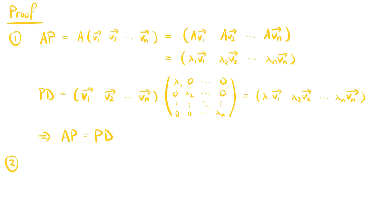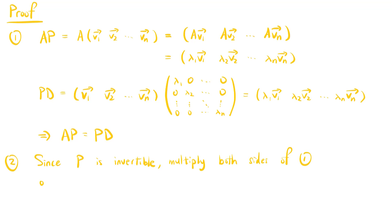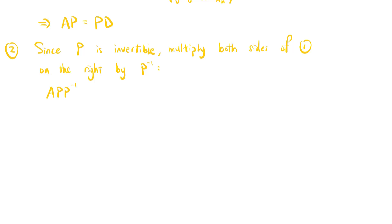For the second point, since P is invertible, we can multiply both sides of the first point on the right by P inverse, and we get A times P times P inverse equals P times D times P inverse. So A equals P times D times P inverse.